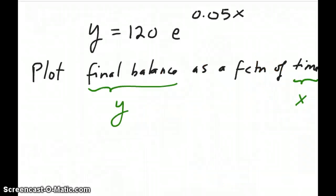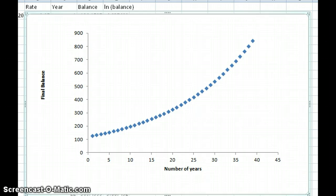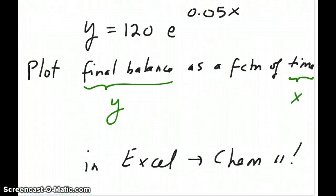I can write a general equation for this particular compound interest example by saying that y equals 120 times e to the power of 0.05x, where x is time and y is the final balance. Once I have this function, I can plot final balance y as a function of time x. If I do this in Microsoft Excel, this should be the plot that you will see. Here is final balance and here is number of years. What I did was just calculate for every year from year 1 to year 40 approximately, what is the amount of money I'm going to get at the end of that year. You can see that it has this exponential shape because our function is an exponential function. You should be able to do what I just showed you in Excel because we learned this in Chem 11.